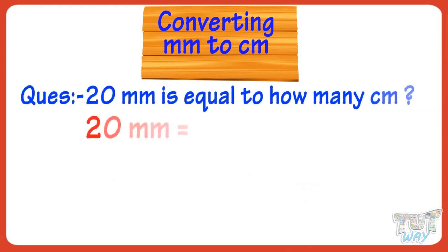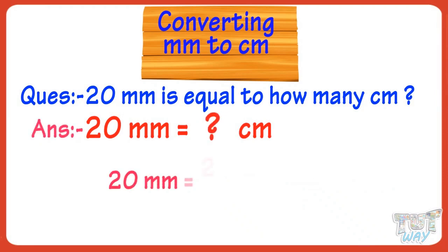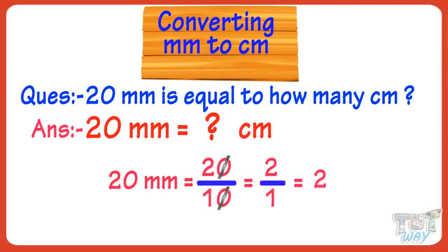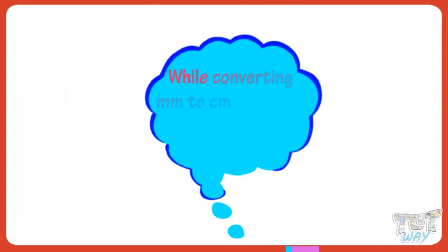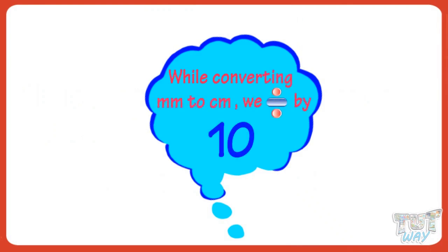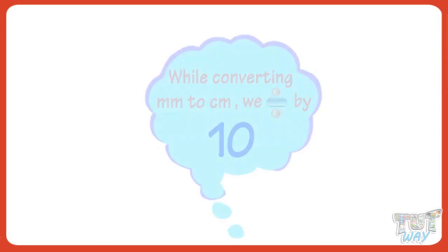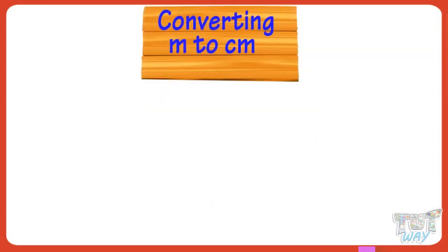20 millimeters is equal to how many centimeters? 20 divided by 10 equals 2. So 20 millimeters equals 2 centimeters. So kids, when we have to convert back millimeters to centimeters, we divide by 10.